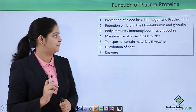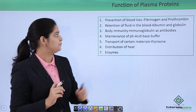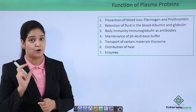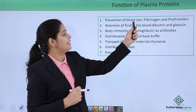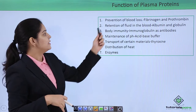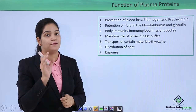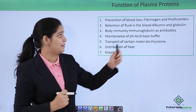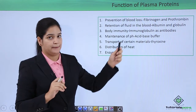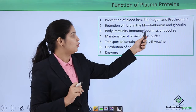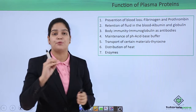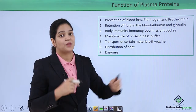Let's talk about the functions of plasma proteins. First, prevention of blood loss — this is done by clotting, which is manufactured by two main proteins: fibrinogen and prothrombin, both present in the blood plasma. Next, retention of fluid in the blood — the retention of body fluid is done by albumin and globulin of the plasma. Next, body immunity — body immunity is carried out by the protein immunoglobulin.